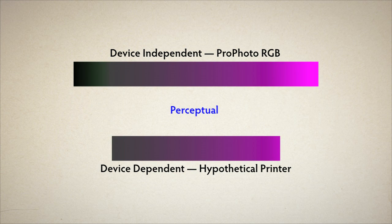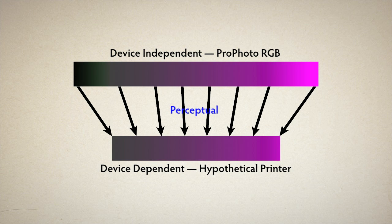If I apply perceptual, the CMM compresses the color space to the destination color space, so even in-gamut colors can change. This means it maintains more detail in the out-of-gamut areas, but it also means it can shift the colors of the in-gamut areas.